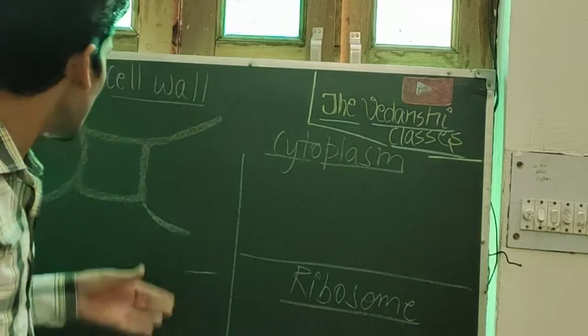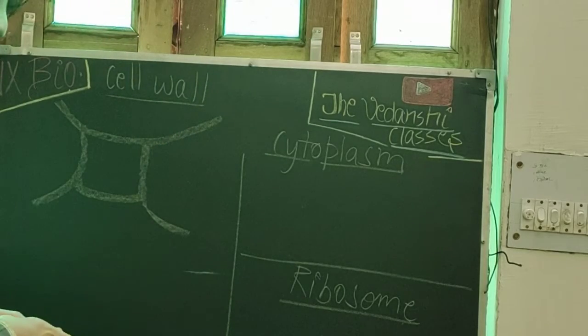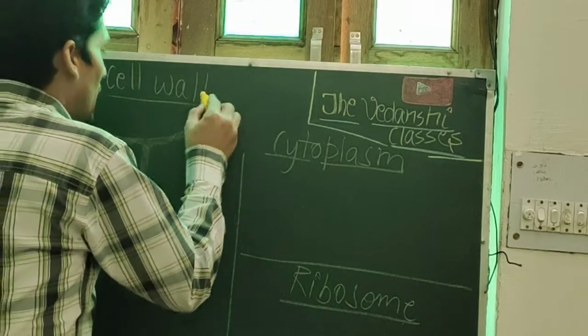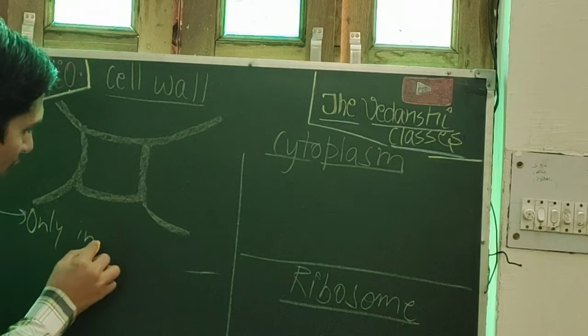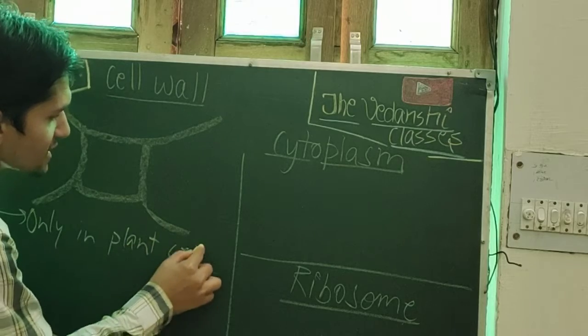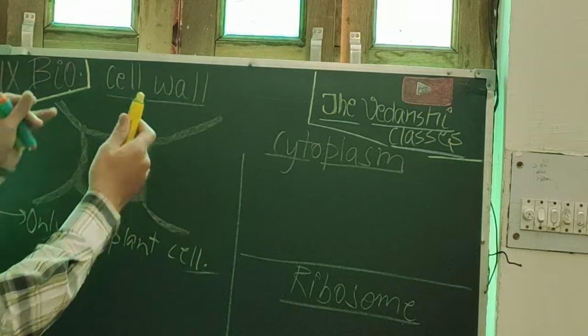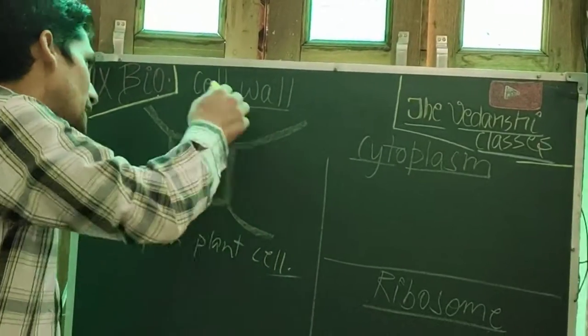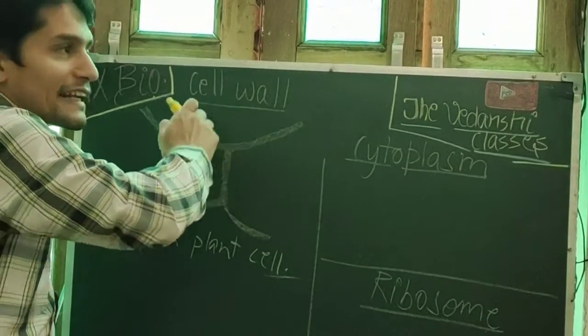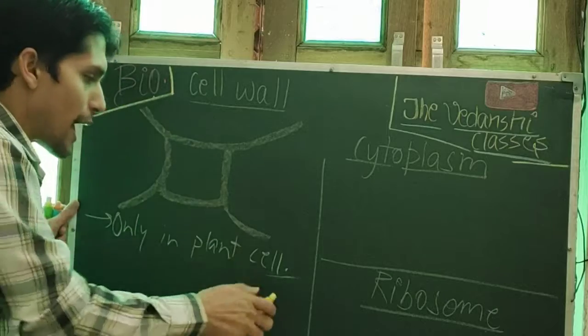First, start with the cell wall. It is found only in the plant cell. It is the characteristic feature between the animal and the plant cell. In the plant cell, cell wall is present. In animal cell, cell wall is absent.